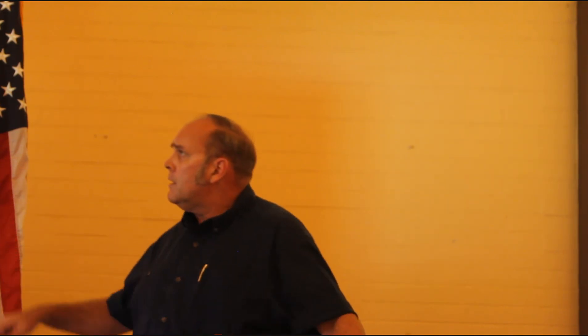They had two states they had a real problem with: Virginia and New York—the two big states they really needed. Early on starting in 1787, Hamilton attacked Governor Clinton of New York, who was anti-Federalist and had told John Jay, 'You're not going to be a delegate from us because you are a Federalist. I want to remain a state, not part of that nation, so I'm not going to send you down there.' So John Jay was not a delegate from New York while Clinton was in charge. Patrick Henry pulled a similar move in Virginia.